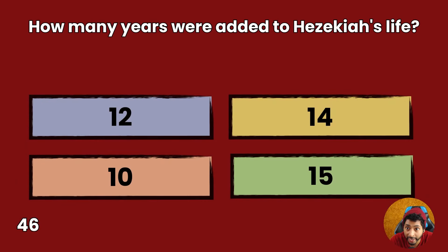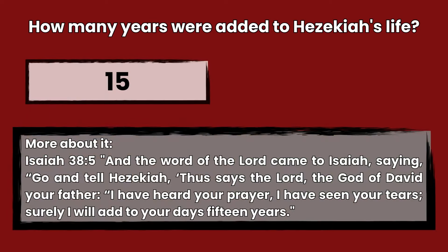Question 46: How many years were added to Hezekiah's life? 12, 14, 10, or 15? Answer: 15. And the word of the Lord came to Isaiah, saying, Go and tell Hezekiah, Thus says the Lord, the God of David your father, I have heard your prayer, I have seen your tears, surely I will add to your days fifteen years.